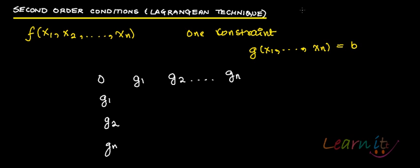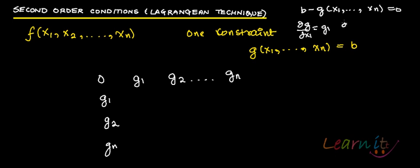The constraint g can be written as b minus g(x1, ..., xn) = 0. So del g / del x1 is g1, del g / del x2 is g2, and so on. This is how you border the matrix. The remaining elements are the second-order partial derivatives of the Lagrangian function.